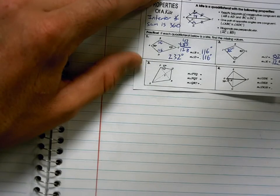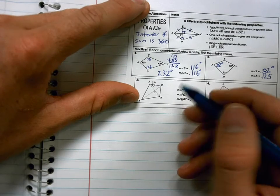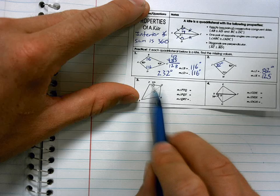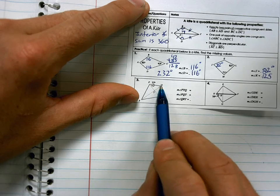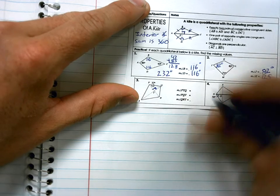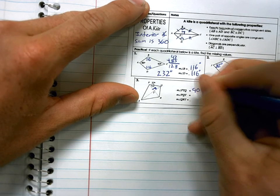I know this angle. I need to find PTQ. PTQ forms. These two diagonals are perpendicular. Makes PTQ 90 degrees.